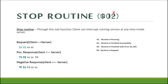Stop routine sub-function is 02. If the tester wants to stop a particular routine, this sub-function can be used. The tester sends a stop routine request with 0x31, 0x02, and the two-byte RID. DCM validates and tries to stop the routine. Once it is stopped, DCM sends a positive response. The status byte 04 in the response indicates the routine is stopped.